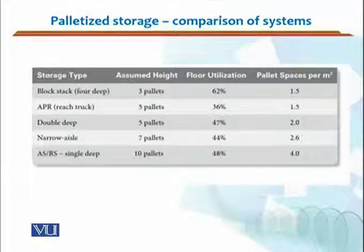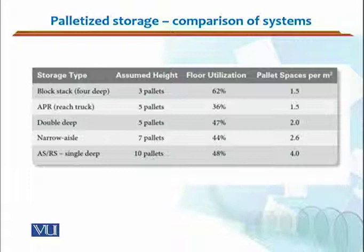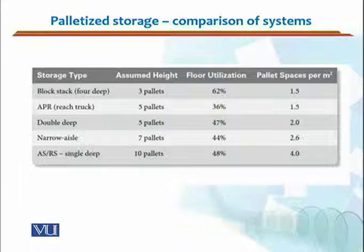For a typical pallet size, the storage type of block stack with 4 deep — it can be single deep, double deep, or 4 deep. The assumed height would be 3 pallets, making it a 4-deep block stack. The floor utilization is 62% and the pallet space per square meter is 1.5. We need at least 6 times the space for moving around the pallet, and at the minimum requirement, 3 times the pallet space.